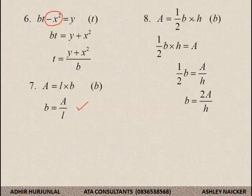Question number 8. Let's look at this one a bit more in detail. You are manipulating for B. Half B multiplied by H is equal to A. I swap them around. Step number 1. I do not want to see the H.